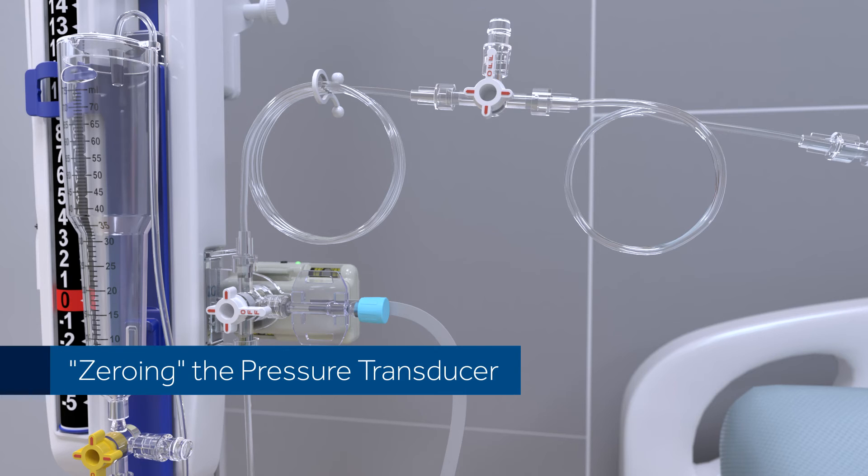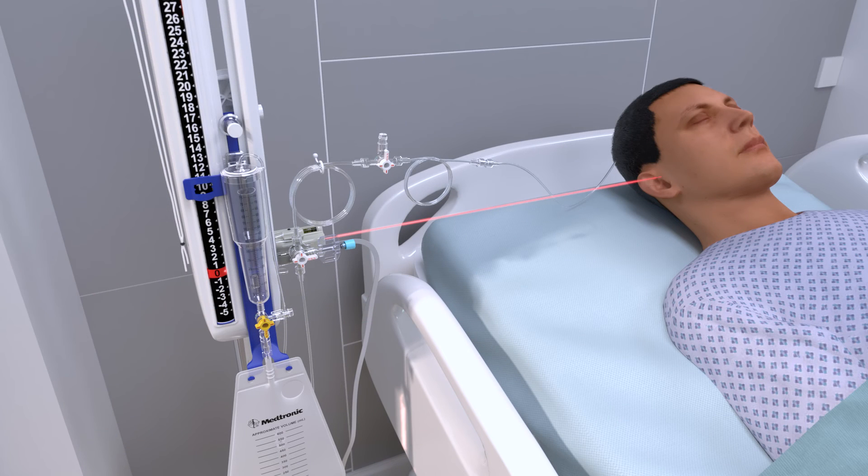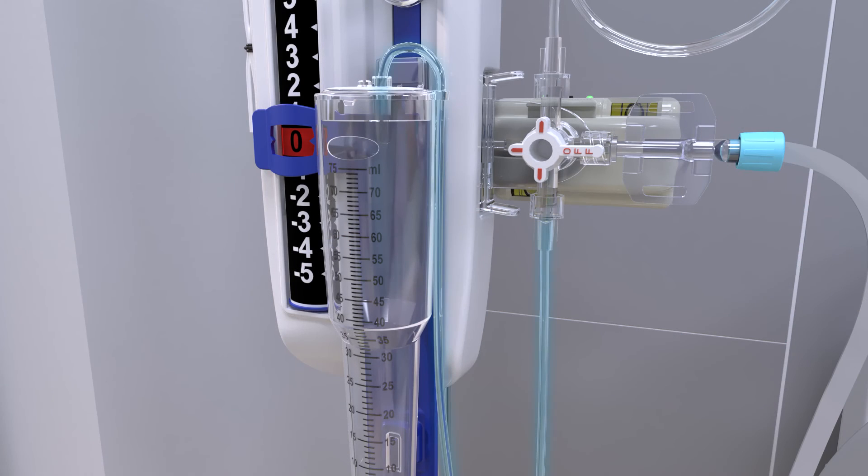Before zeroing the transducer to atmospheric pressure, it's important that two conditions be met. One, the drainage system should be level with the patient. Two, the tubing between the transducer and the top of the drip chamber must be completely filled with fluid.